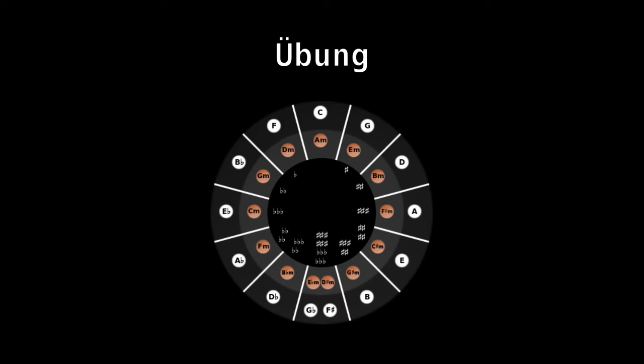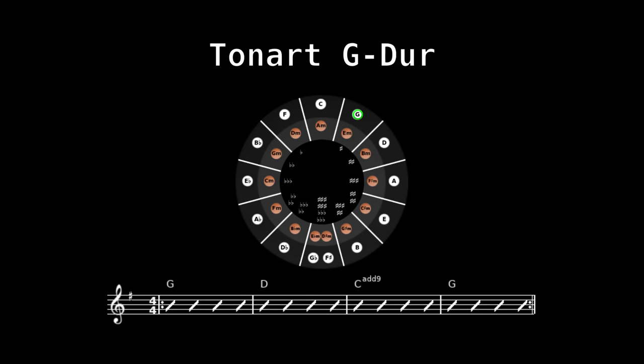Am besten diese Übung auch in anderen Tonarten üben. Die Akkordfolge in der Tonart C-Dur, Tonart D-Dur, Tonart A-Dur, Tonart E-Dur.